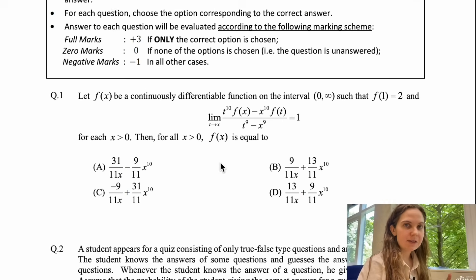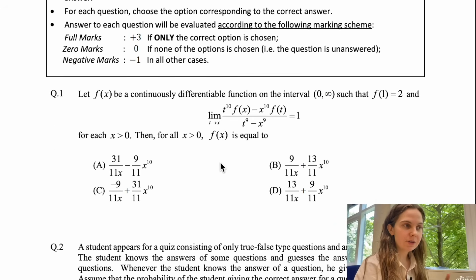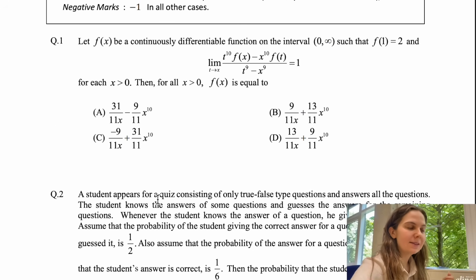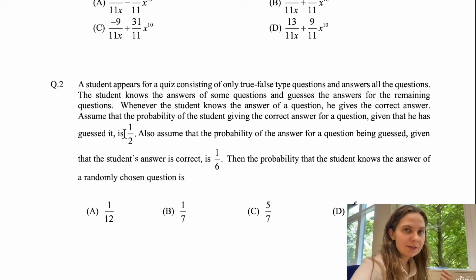So if you just briefly glance through the mathematics part of the first paper we see that we start off with a calculus question, the second question is a question on probability, then we have some trigonometry.